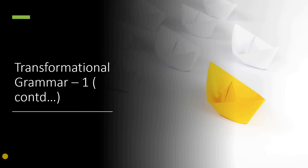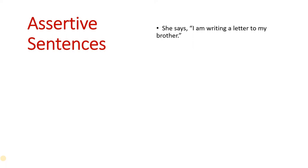Hello friends, today we are going to continue with transformational grammar. It's a big idea where there are so many transformations that we can see when we are using languages, and today we are going to do the simplest kind. We will look at the next transformation that we often see happening with the assertive sentences. If you remember, we did a few videos back about the kinds of sentences and there were four kinds.